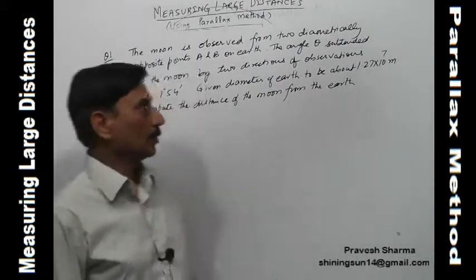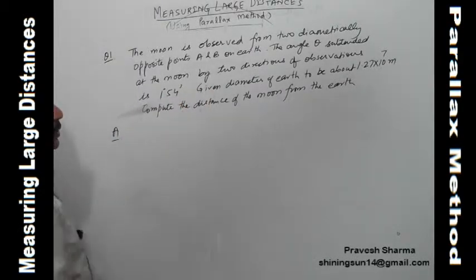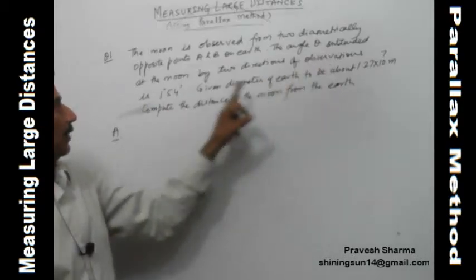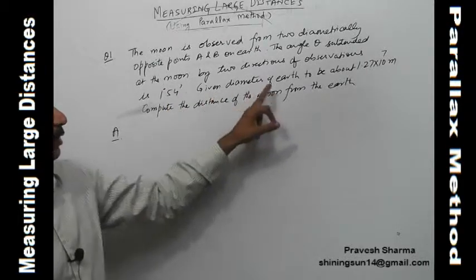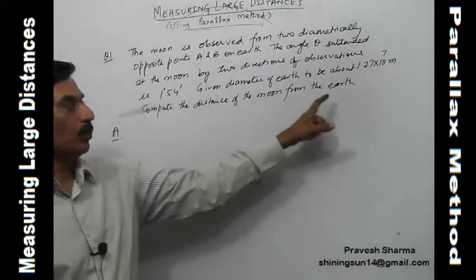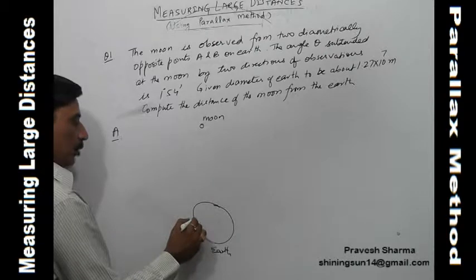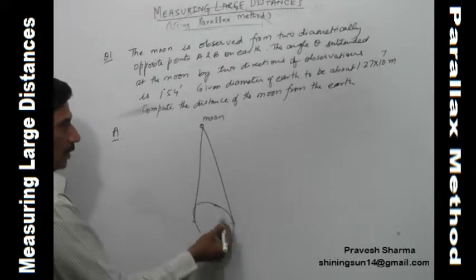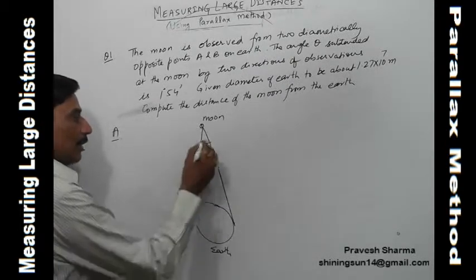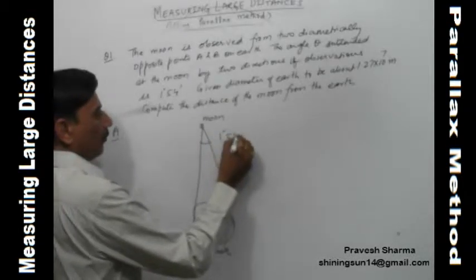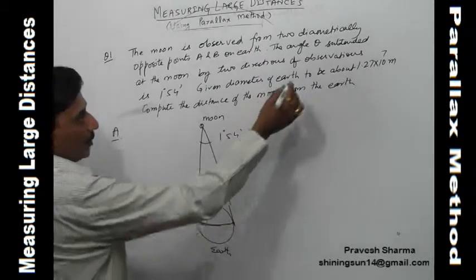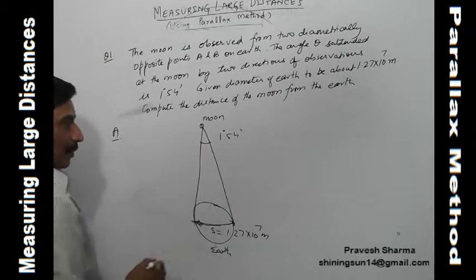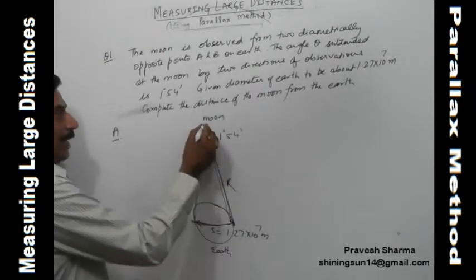Now let us take an example from the textbook. The Moon is observed from two diametrically opposite points A and B on Earth. The angle θ subtended at the Moon by the two directions of observation is 1 degree 54 minutes. Given the diameter of Earth is about 1.27 × 10⁷ meters, compute the distance of the Moon from the Earth.